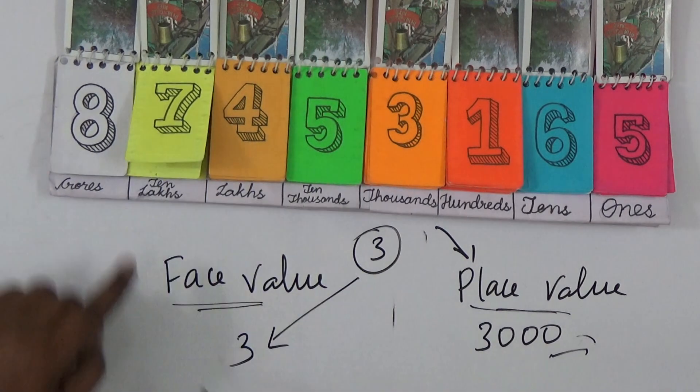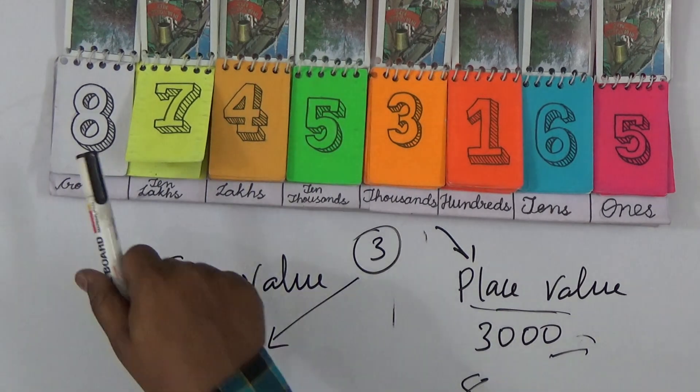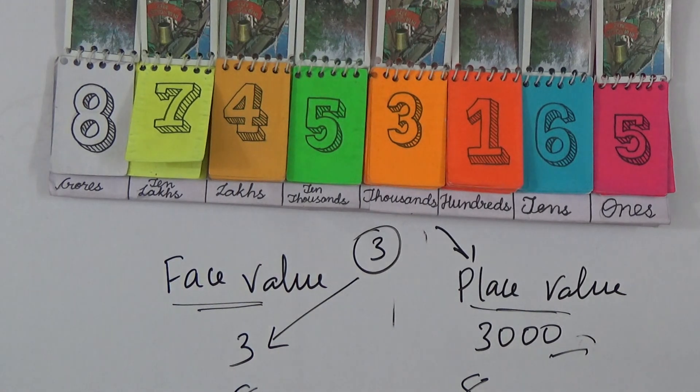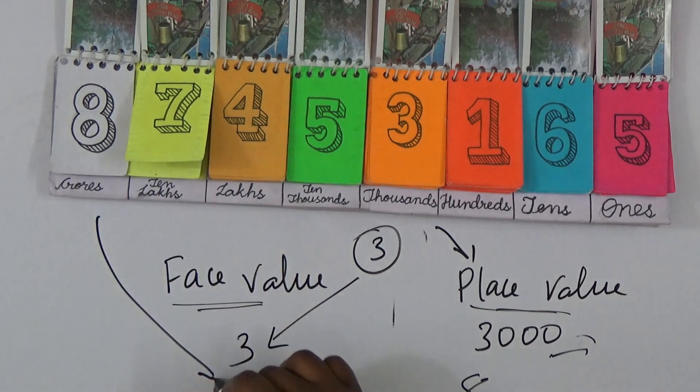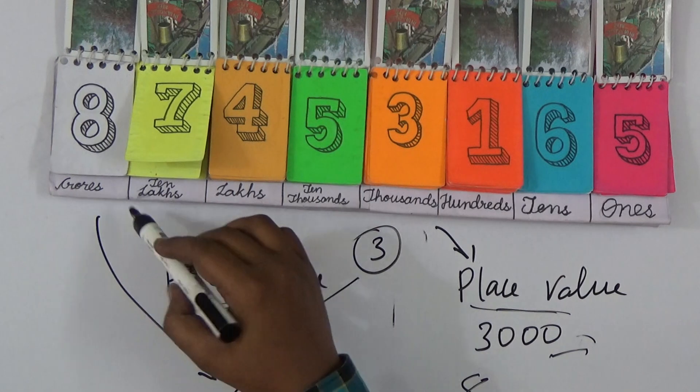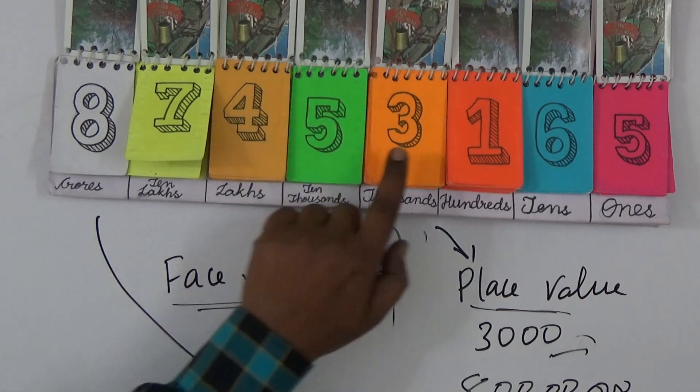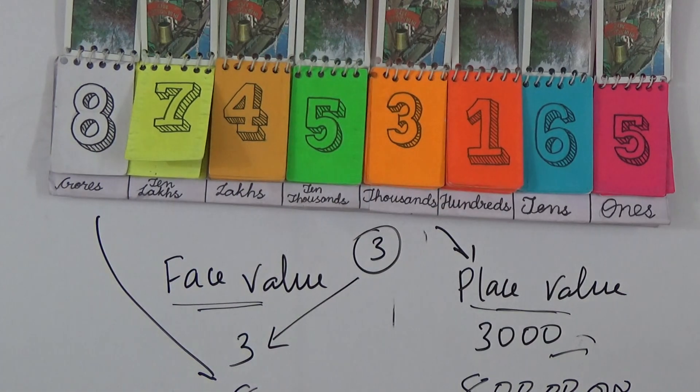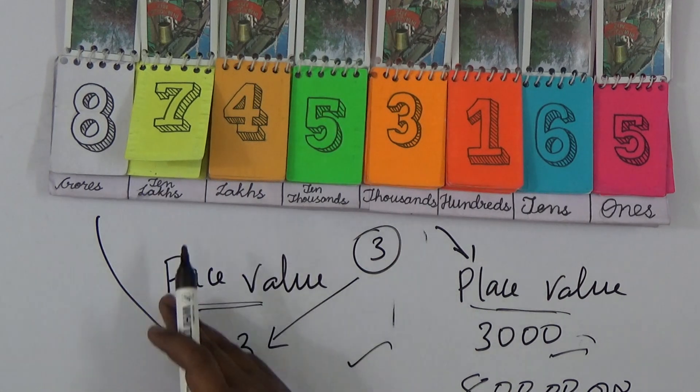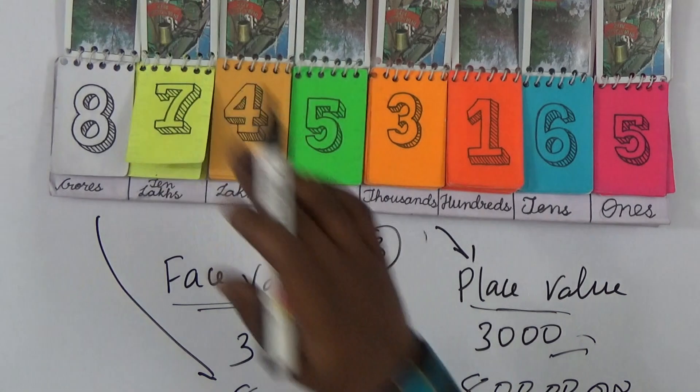Here it's easy to get the face value. Face value of eight means eight is here, right? Face value eight is eight itself. But when you take the place, this is crores, so eight crores. Because after eight: one, two, three, four, five, six, seven - so there should be seven zeros in the place. It's very easy to find out using this place and face values.